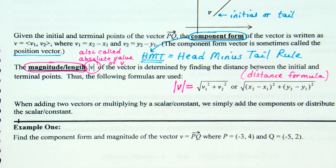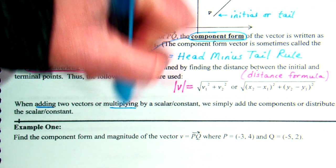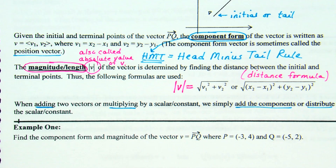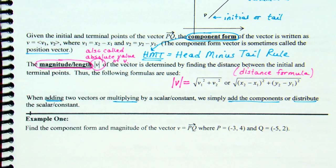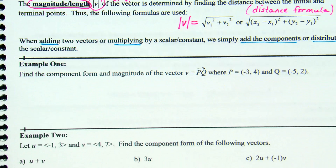When adding two vectors or multiplying by a scalar or constant, we simply add the components or distribute the scalar. When adding two vectors, you add X with X and Y with Y — nothing fancy. A scalar is just a constant out front. If we're multiplying by a scalar, it distributes into both pieces of the component form.